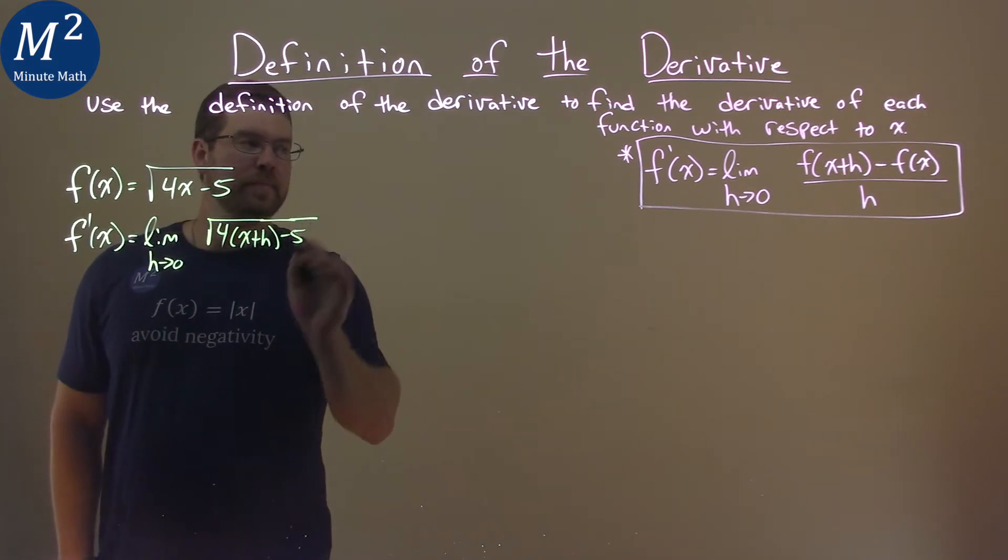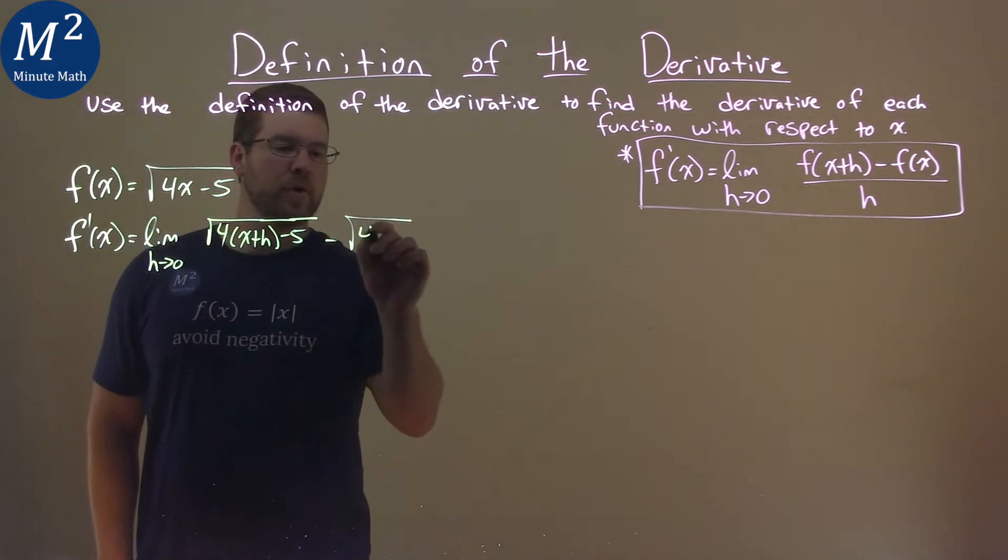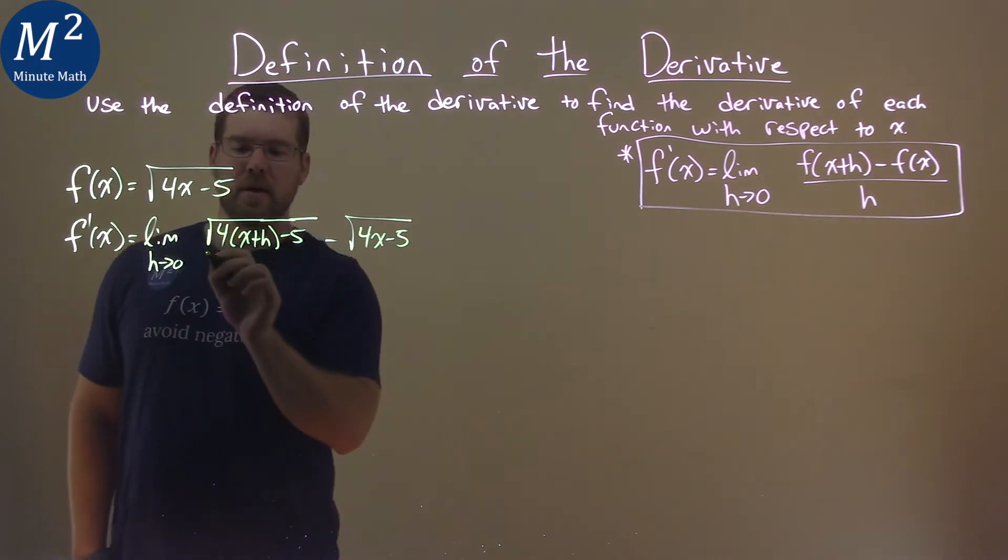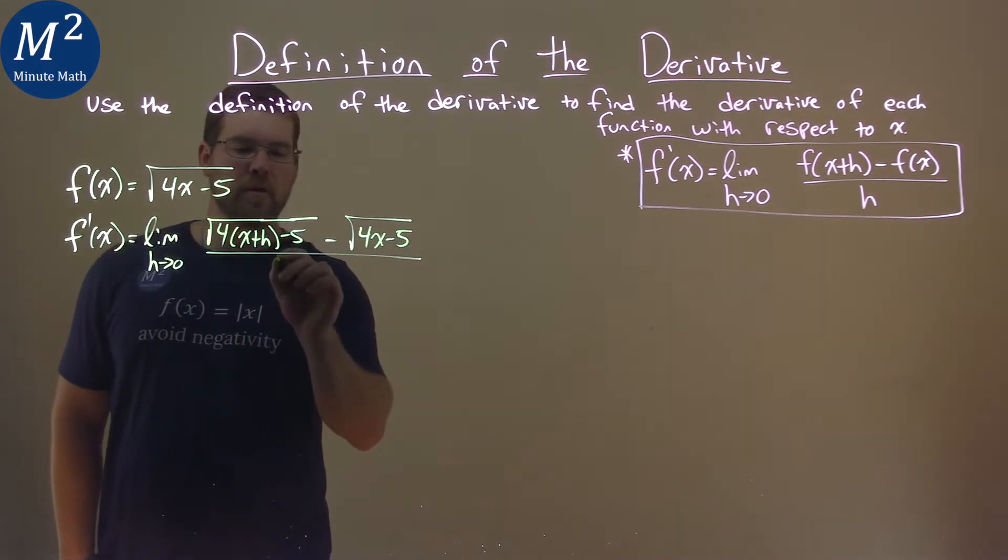Minus 5, minus the function itself, square root of 4x minus 5, and that's all over our h value.